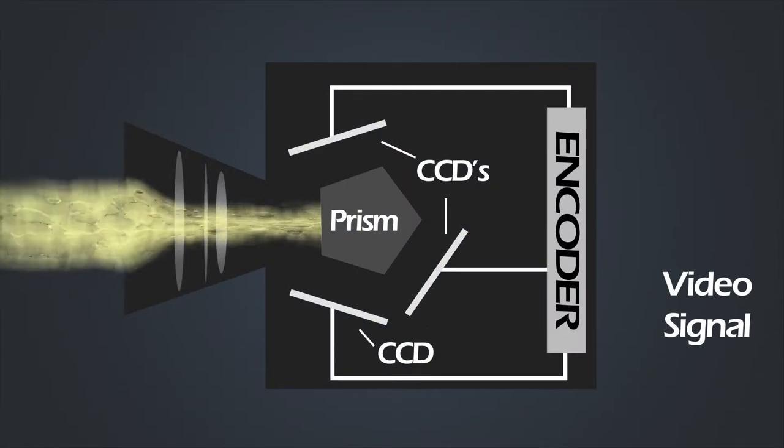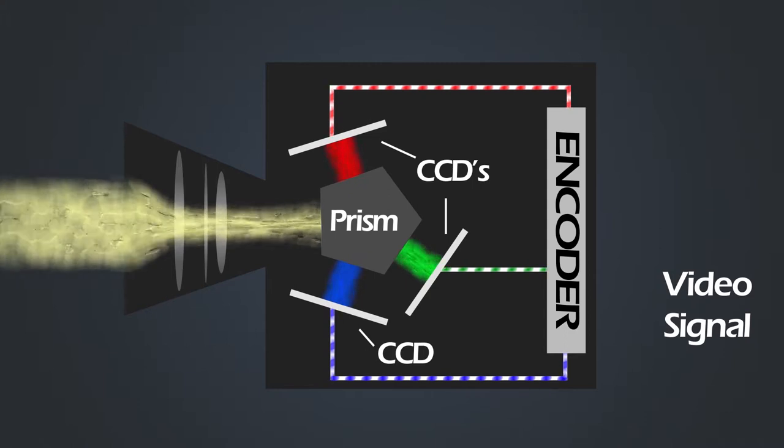So first of all you start off with your camera and the light that it records get focused by the lenses in the lens and then these get focused into what we call a prism. This prism will separate this light into three wavelengths, red, green and blue and then these would get dispersed onto CCDs also known as charge couple devices and these will turn them into an electronic signal which then each go into the encoder.